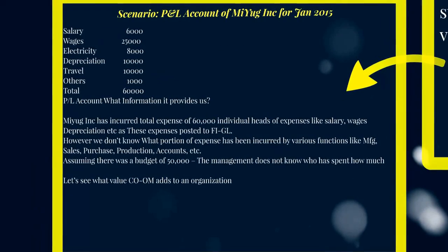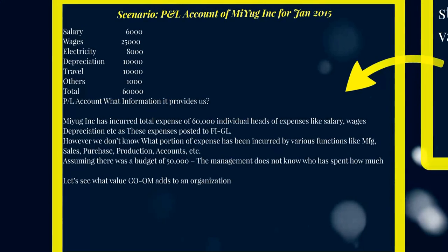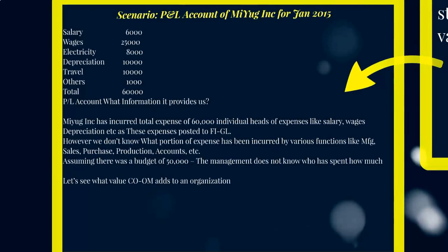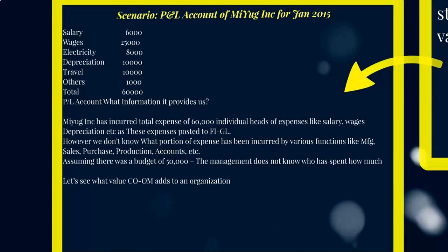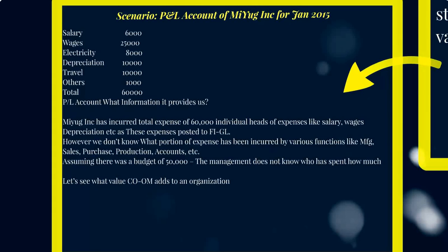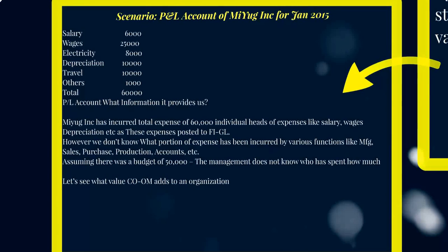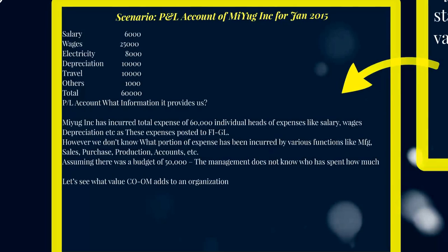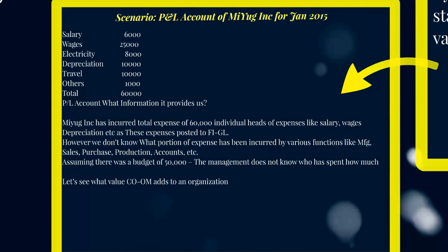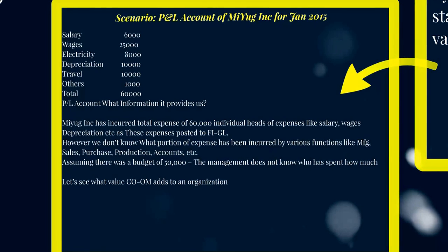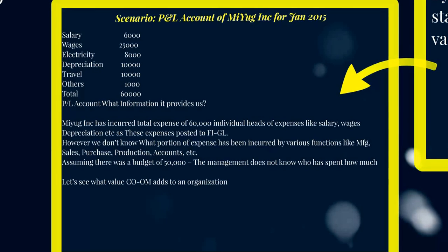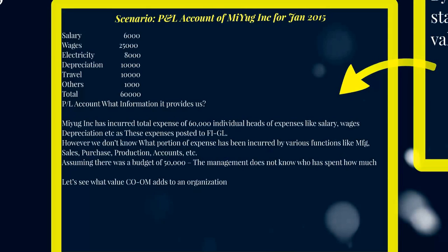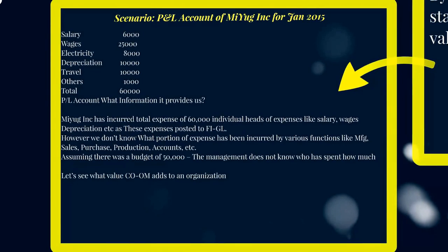Let's look at a scenario. In this slide we see salary, wages, electricity, depreciation, travel, and other expenses with a total cost in a profit and loss account. Mayug Inc. has incurred total expenses of 60,000. Individual heads of expenses like salary, wages, and depreciation come from general ledger accounts — salary account 6,000, wages 25,000, electricity, depreciation, travel, and so on — totaling 60,000.